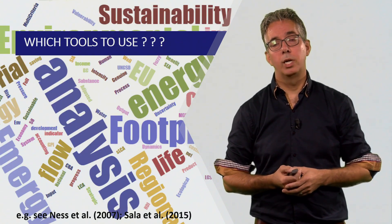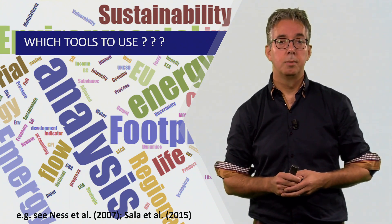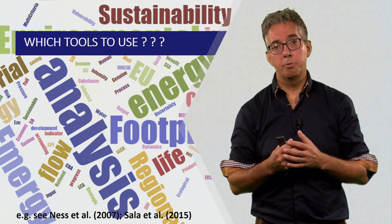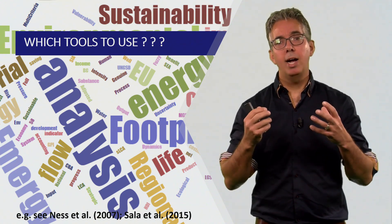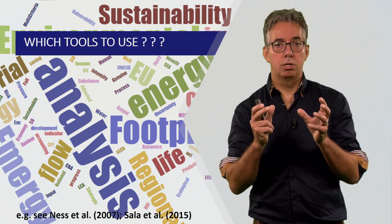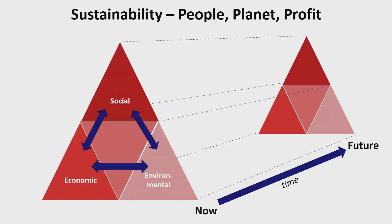Now we come to the third question: which tools to use for sustainability assessment? Sustainability is a very broad concept relating to different domains, and there is a whole variety of tools available. To structure these tools, I will introduce a framework based on people, planet, profit — people referring to social and ethical issues, planet to environmental issues, and profit to economic issues — and we will consider this both for now as well as for the future.